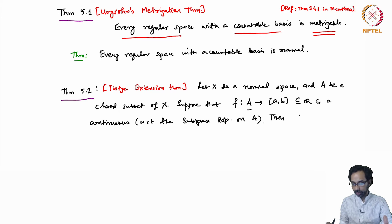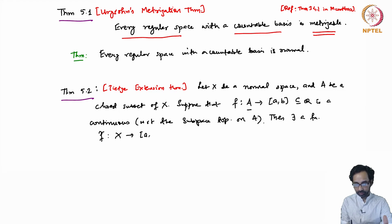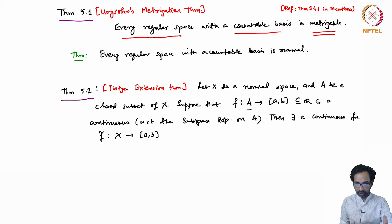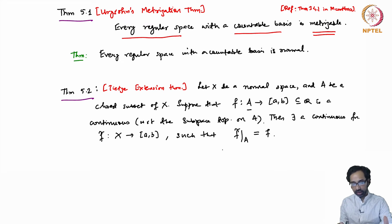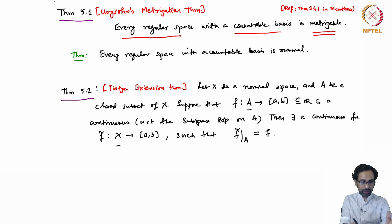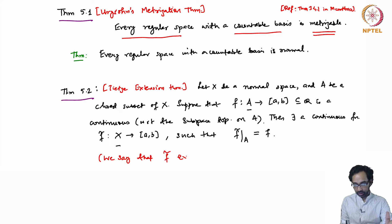Let me call it F̃, which is from X to [a,b]. This is also a continuous function. So, there exists a continuous function F̃ from X to [a,b] such that when you restrict F̃ to the subset A, this is equal to the function F. This is why it is called an extension theorem — because it extends a given continuous function on a subspace to the whole space X. We say that F̃ extends the function F.